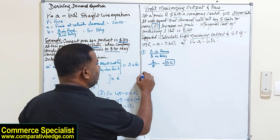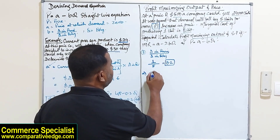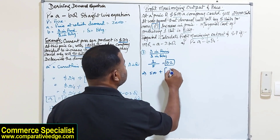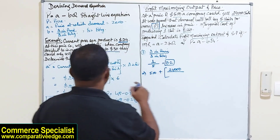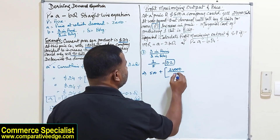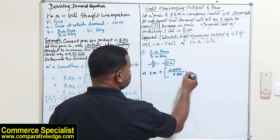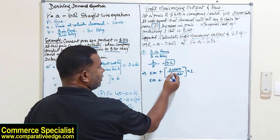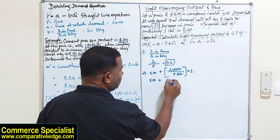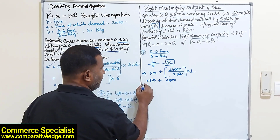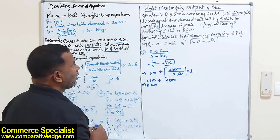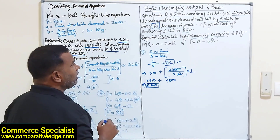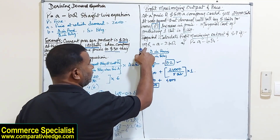Next, we calculate A. Current quantity at current price is 24,000 units, change in quantity is 5 units, and change in price is $1. So A = 500 + (24,000 / 5) × 1 = 500 + 4,800 = 5,300. Now that we have A = 5,300 and B = 0.2, we put these into the marginal revenue function. Marginal revenue = A − 2BQ = 5,300 − 0.4Q.